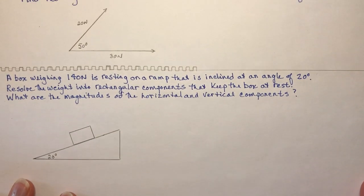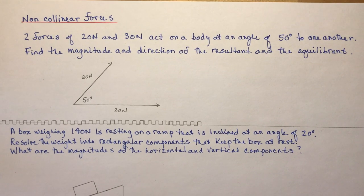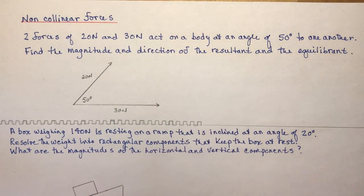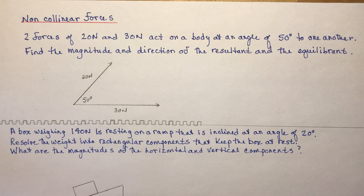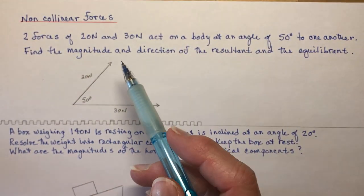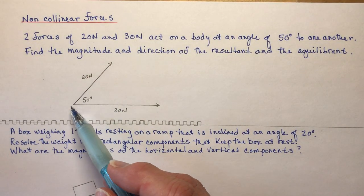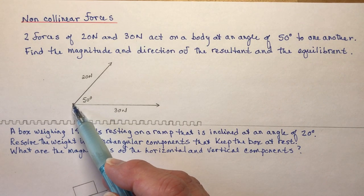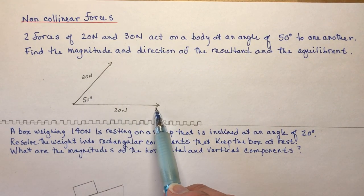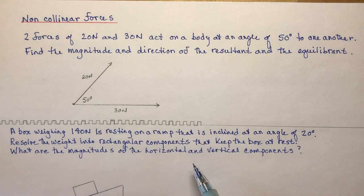Non-collinear forces are the ones that cause most word problems. You have two forces of 20 newtons and 30 newtons acting on a body at an angle of 50 degrees to one another. Find the magnitude and direction of the resultant and the equilibrant. The vectors are drawn tail to tail, with 20 N up and 30 N down, 50 degrees between them.